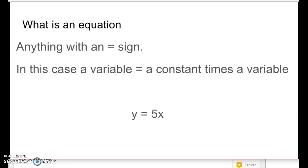What is an equation? Well, that's anything with an equal sign. And in this case, a variable equals a constant rate times a variable. So we have y equals 5 times x. Remember from the last lesson, 5, the number, is a constant because it never changes. And we have two variables. And this is the form the equation will always take for a proportional relationship. It can always be made into y equals 5x.